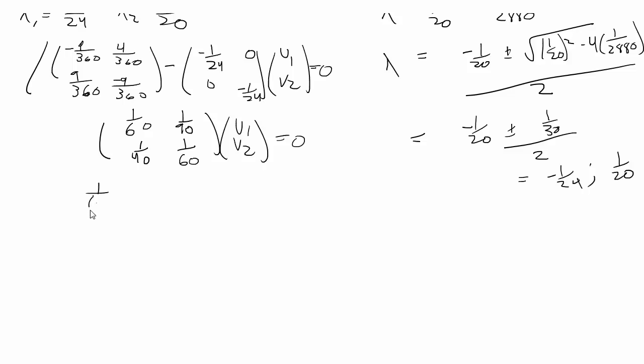So that's going to give you 1 over 60 v1 plus 1 over 90 v2 is equal to 0. So for lambda equal to negative 1 over 24, we're going to get the vector 1 over negative 32. For lambda 2, we're going to repeat the same process, just plugging in 1 over 20.